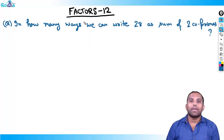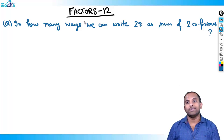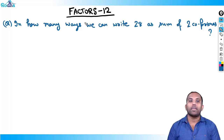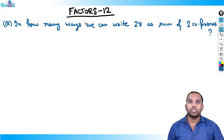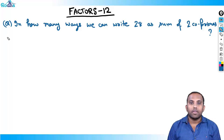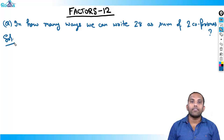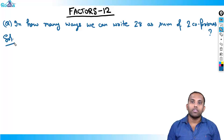Hi everyone, my name is Ravi Prakash and this is the 12th class of Factors, and we are in Number System Part 2. The question we start with is: in how many ways can we write 28 as a sum of two co-primes? I hope you have watched Factors 11, the previous video, because we'll be using the Euler number concept here.